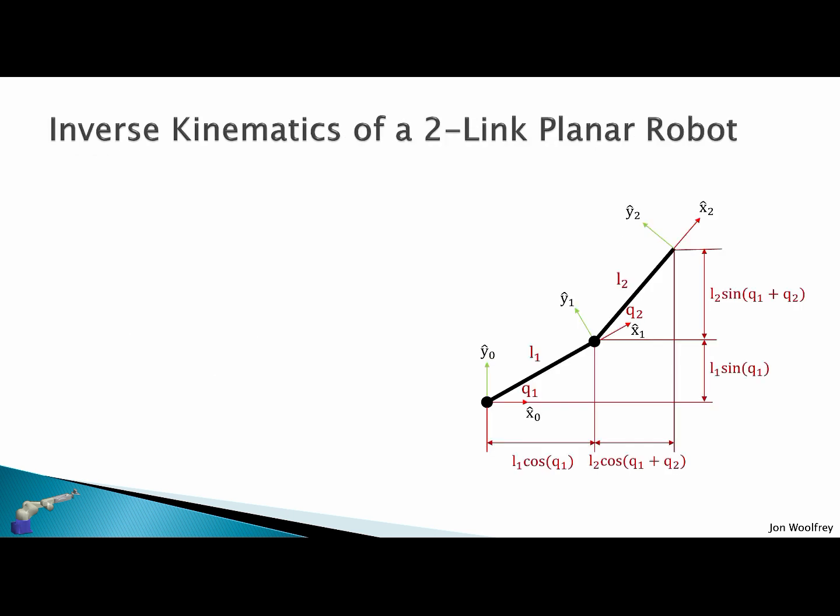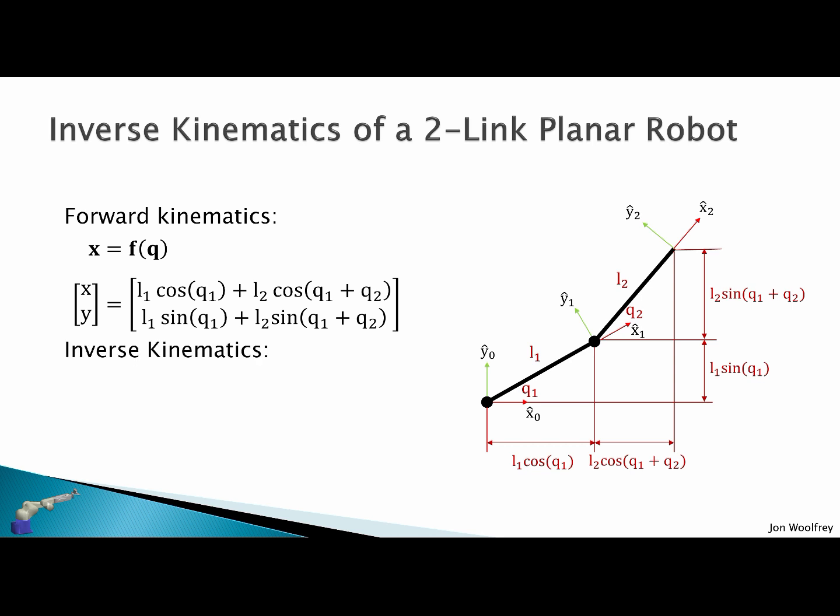Let's try and solve the inverse kinematics of a two-link planar robot. We know from the forward kinematics that X is a vector function of Q which is equal to this expression here. Then the inverse kinematics problem is what is Q1 and Q2? How do we solve this inverse of the forward kinematics given X for Q1 and Q2?